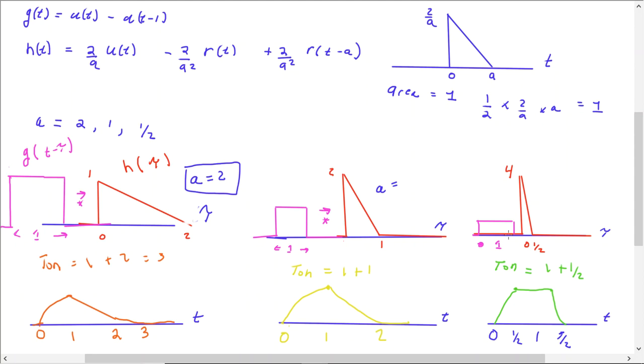It would be so thin compared to one. So the area would still be one, but the time on is so much smaller than the signal that effectively, and I'll just kind of try to draw it, that would look like a delta function.